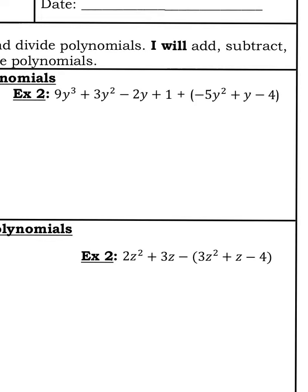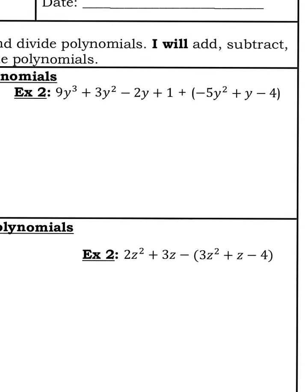So why don't you pause the video and try example two for yourself? Here's example two. I got 9y to the third. I have nothing else to the third power. I have 3y squared, I have negative 5y squared, I have negative 2y, I have a y, and I have a 1 and a negative 4.